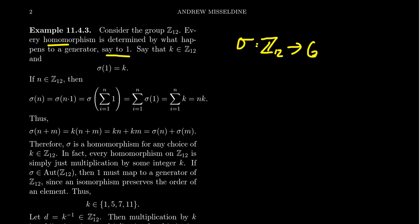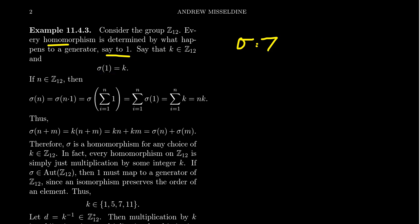if you know where 1 goes, then you actually know what everything does. Our ultimate goal is to consider automorphisms of Z12. If we know what the generator does, then we know what everything does. So let's say sigma(1) = K for some K inside Z12. This is a property that's true for any homomorphism of a cyclic group — we know what the generator does.